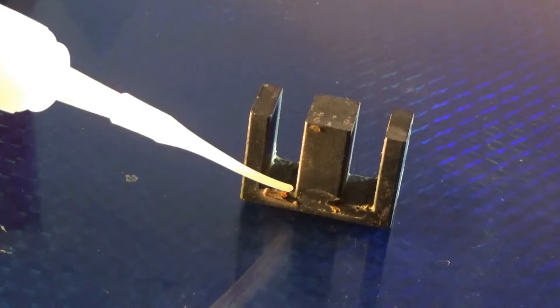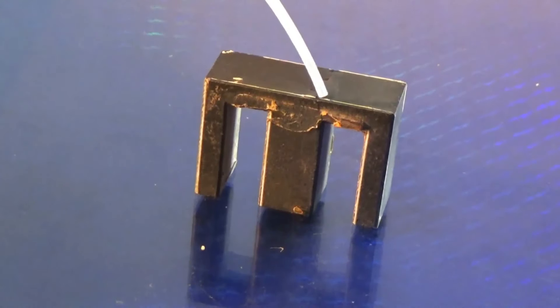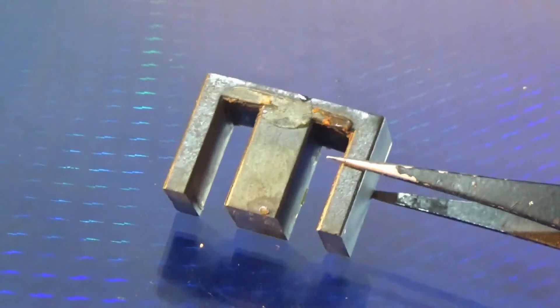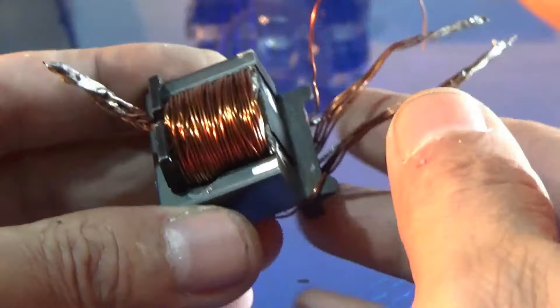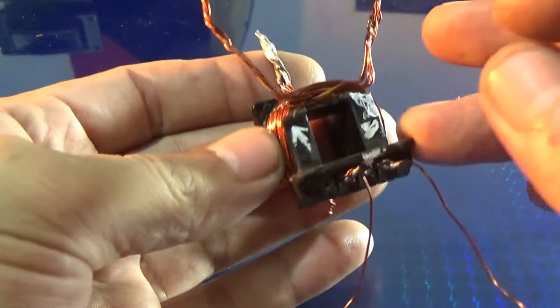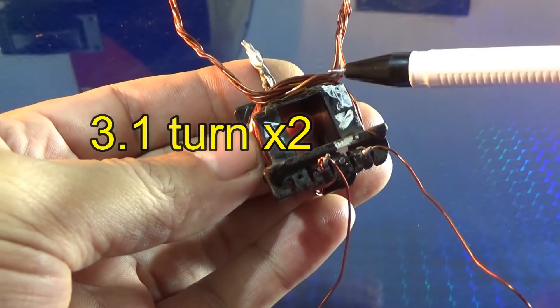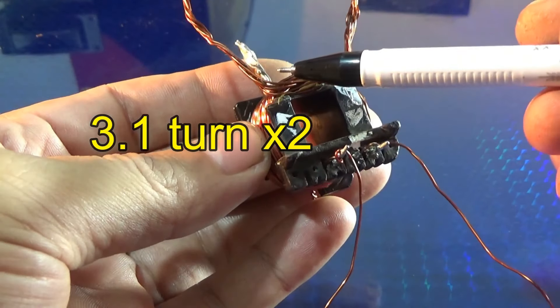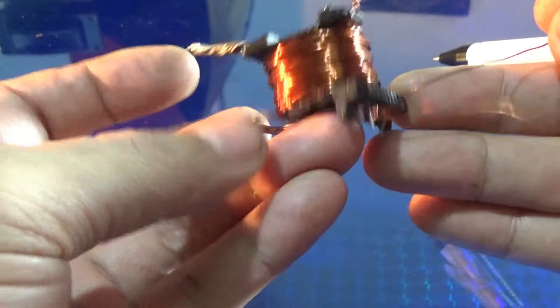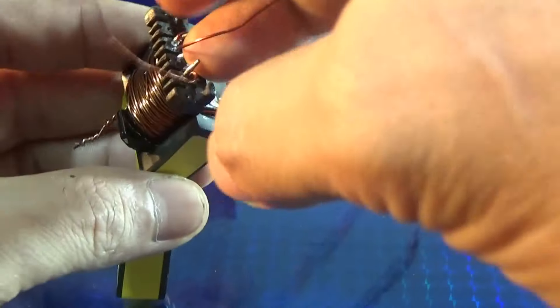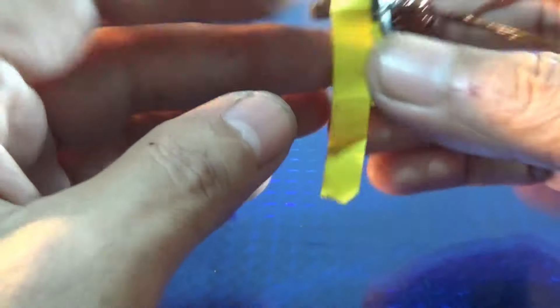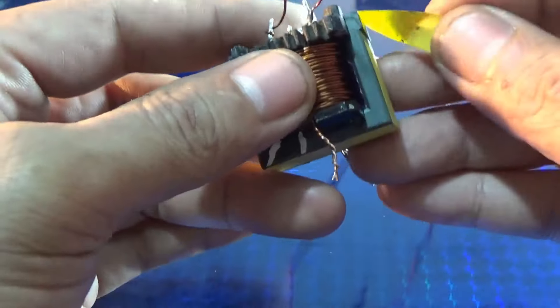Regarding the ferrite core, if you accidentally break it, you can glue it back together. One thing to note is that you must glue it back extremely precisely for it to work well. Now I will install it with the same parameters as above. Wrap tape around it. The tighter, the better.